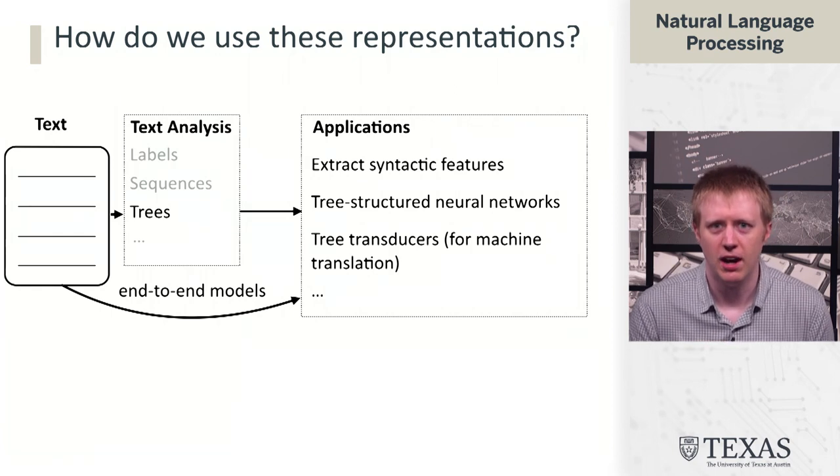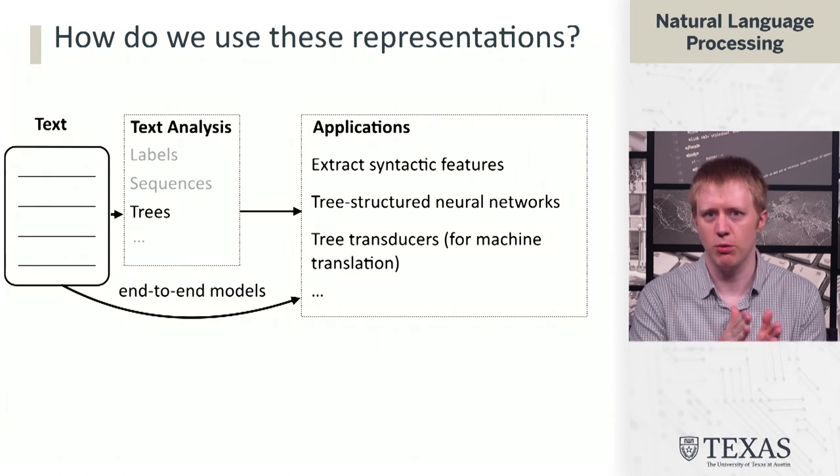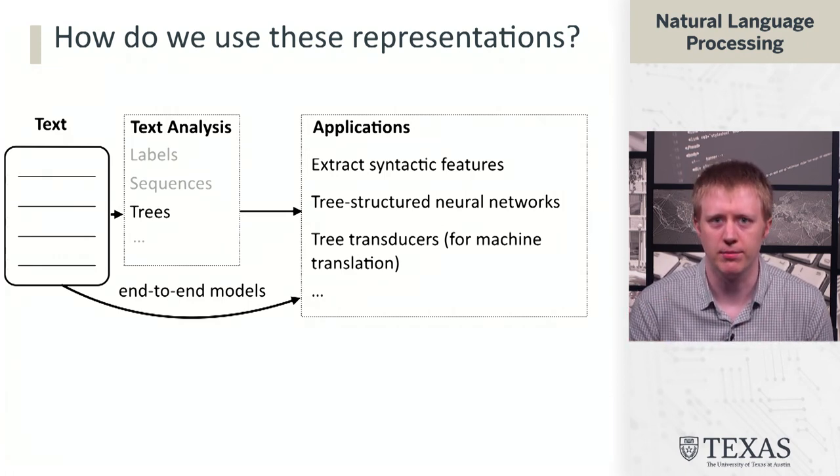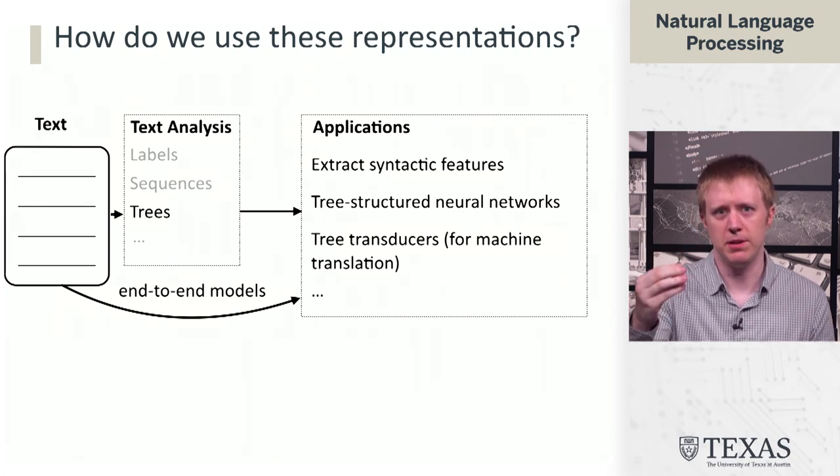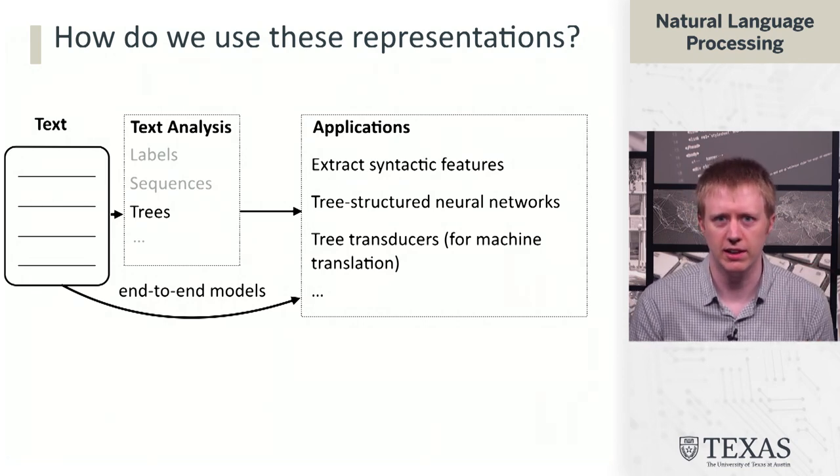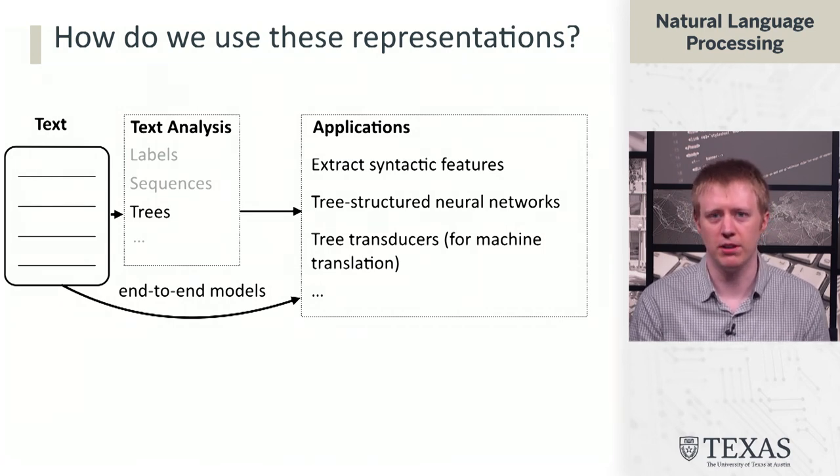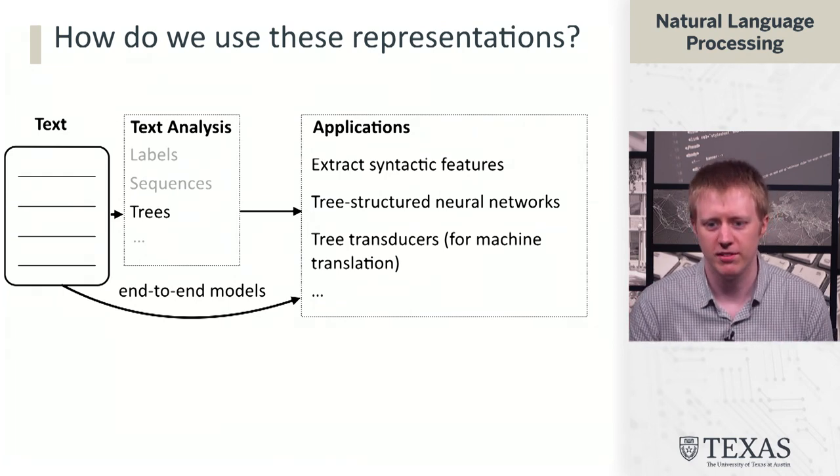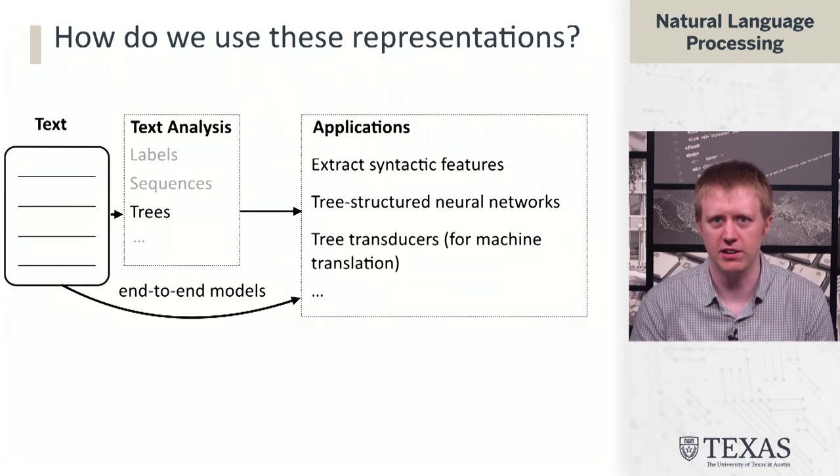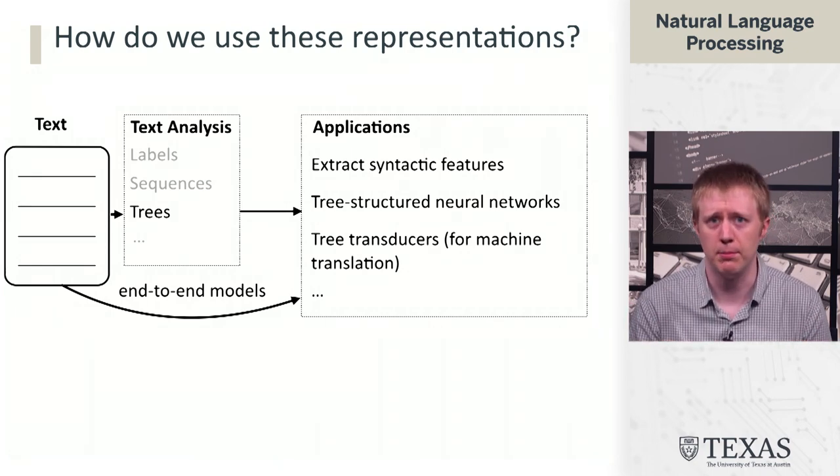Of course, the elephant in the room is that with the rise of deep learning and neural networks, there's an increasing trend towards building purely end-to-end models. There's going to be this tension throughout the course of, do we use these intermediate pieces of text analysis or do we build models strictly end-to-end? The answer is not going to be clear-cut. There have been huge successes from purely end-to-end models, but there's also a lot of interesting cutting-edge work right now that is starting to move them back towards incorporating this kind of discrete structure for reasons of interpretability or controllability. This is a topic that's going to come up again and again throughout the course.